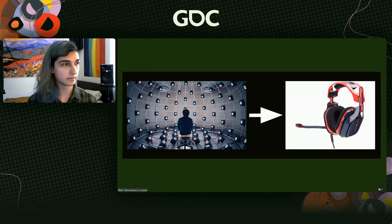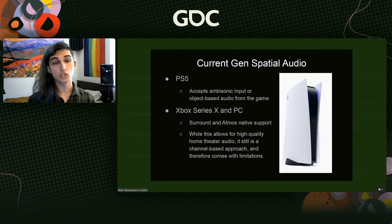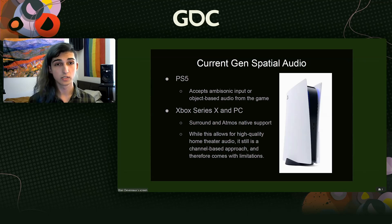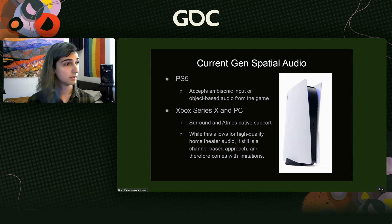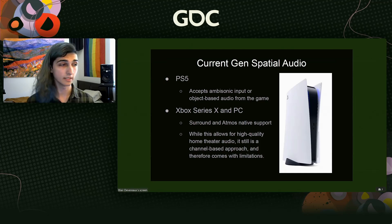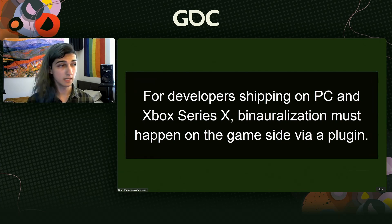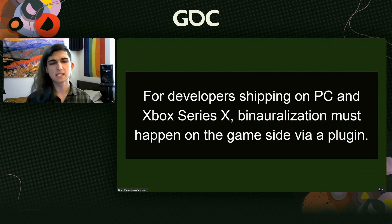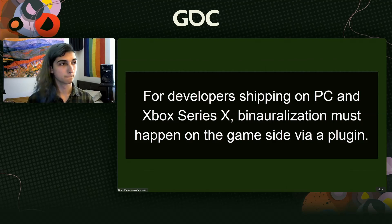Converting that format to the ear that hears the sound is done through a binauralization plugin. The PS5 accepts ambisonic or object-based input from the game, so we don't need a binauralization plugin for that console. But for Xbox Series X and PC, while they do have native Dolby Atmos support, it's still a channel-based approach, so binauralization — the converting of any ambisonic audio to a listenable format — must happen on the game side via a plugin.